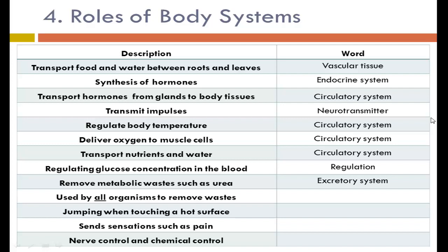Moving metabolic waste like urea is the role of the excretory system. Urea is a nitrogenous waste that occurs in all organisms from the breaking down of amino acids. These nitrogenous wastes — urea, uric acid, or ammonia — need to leave the organism. All organisms use the cell membrane to remove waste; the cell membrane is the ultimate gatekeeper of the body, as all waste must pass through it. In a multicellular organism, after wastes pass the cell membrane, they might go into another system like the excretory system.